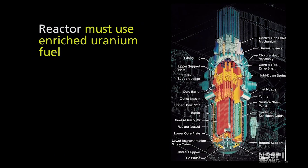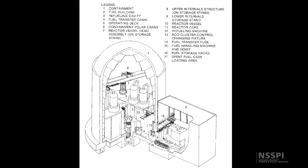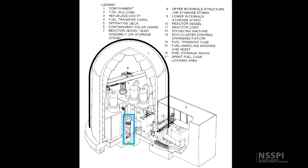Since the PWR uses light water, it also has to use enriched uranium fuel. This picture shows the typical Westinghouse-style PWR reactor. The containment structure shows the reactor as the small component in the center, with the large structures being the steam generators. Containment around the outside is there to provide safety so that if anything bad happened inside the reactor, it would all be contained inside this large concrete and steel structure. Also shown is the spent fuel pool, where spent fuel from the reactor is stored in a separate building outside of containment.